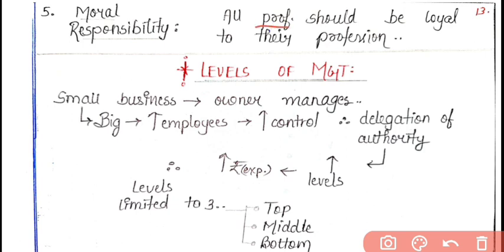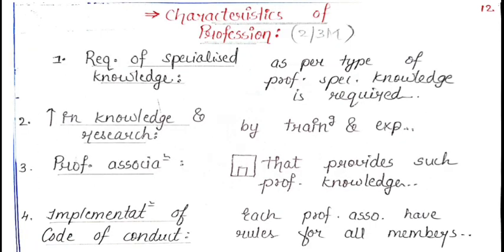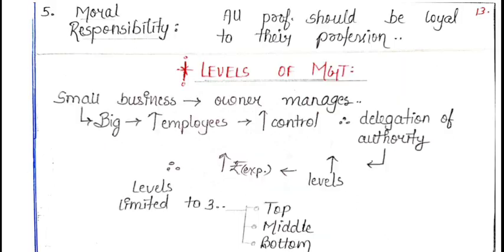All professions should have moral responsibility. For example, there are CAs who sign documents and take money without properly auditing, and there are doctors who tell family members a person is alive even after death — these professionals are not being loyal to their profession. You should be loyal to your profession. So moral responsibility is the fifth characteristic. To summarize: you need specialized knowledge, keep increasing it, get it from professional associations, follow the code of conduct, and have moral responsibility.